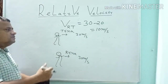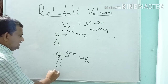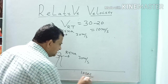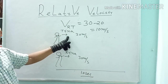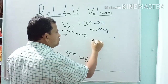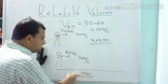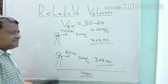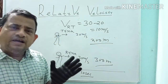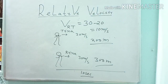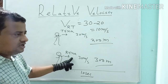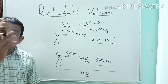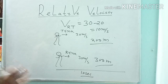Suppose a question asks: in 10 seconds, Tina covers 200 m, Rina covers 300 m. What is the distance difference? That is 100 m. Meaning Rina is 100 m ahead of Tina in 10 seconds. This is the concept of relative velocity.